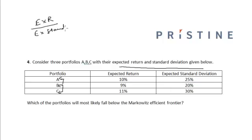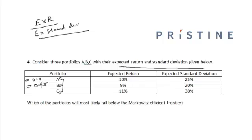For Portfolio A, it will be 10% divided by 25%, which equals 0.4. For Portfolio B, it will be 9% divided by 20%, which equals 0.45.